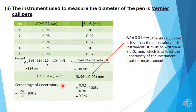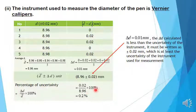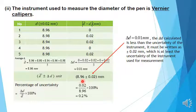Then calculate for the percentage of uncertainty using this formula: 0.02 divided by 8.96, multiplied by 100%. The result is 0.2%. The percentage of uncertainty is less than 15%, which means the result obtained for the diameter of the pen is acceptable.